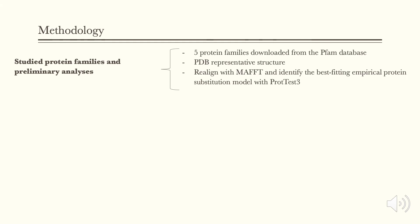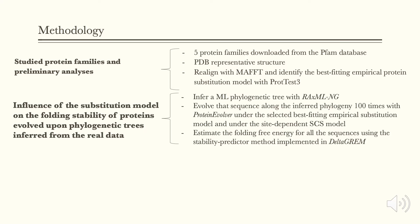For the first stage, five families of proteins downloaded from the PFAM database were selected. For the second study, the maximum likelihood phylogenetic tree was inferred with RUXMLNG for each family of proteins. This simulation of protein evolution was done under the selected best-fitting empirical substitution model, and under the site-dependent SCS model implemented in protein evolving.